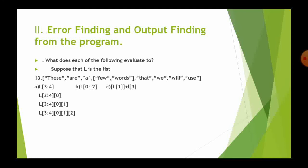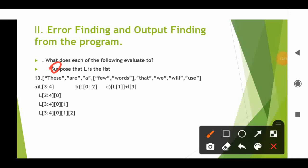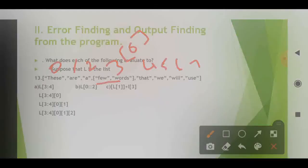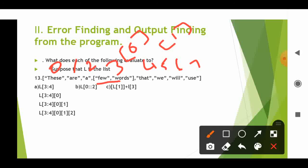Question 13 involves a nested list enclosed in square brackets. The index values start from 0, 1, 2. This is a nested list. To find values: L[0][3][0] gives the first nested element. L[3][0] and L[3][1] are used to access nested items. Slicing method: L[3:4] takes the last value. L[3][4][0] and L[3][4][1] access specific words within nested sublists.